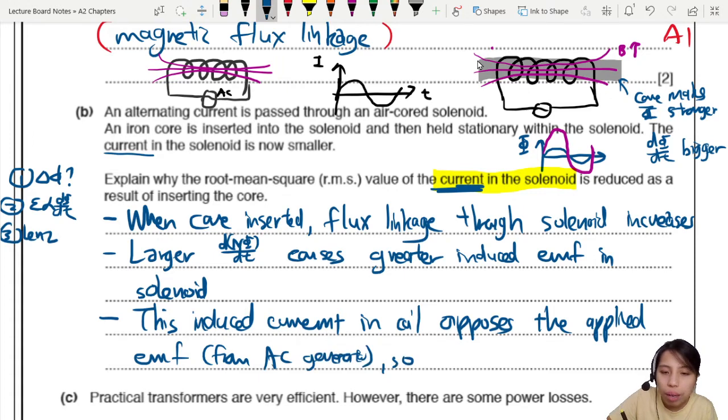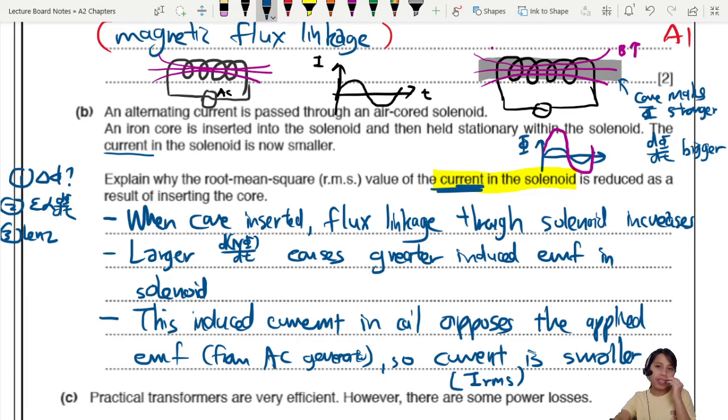is fighting against the applied EMF. This is from the AC generator. So current is smaller. As you oscillate. So current means, if a current is smaller, means your root mean square current will be smaller.